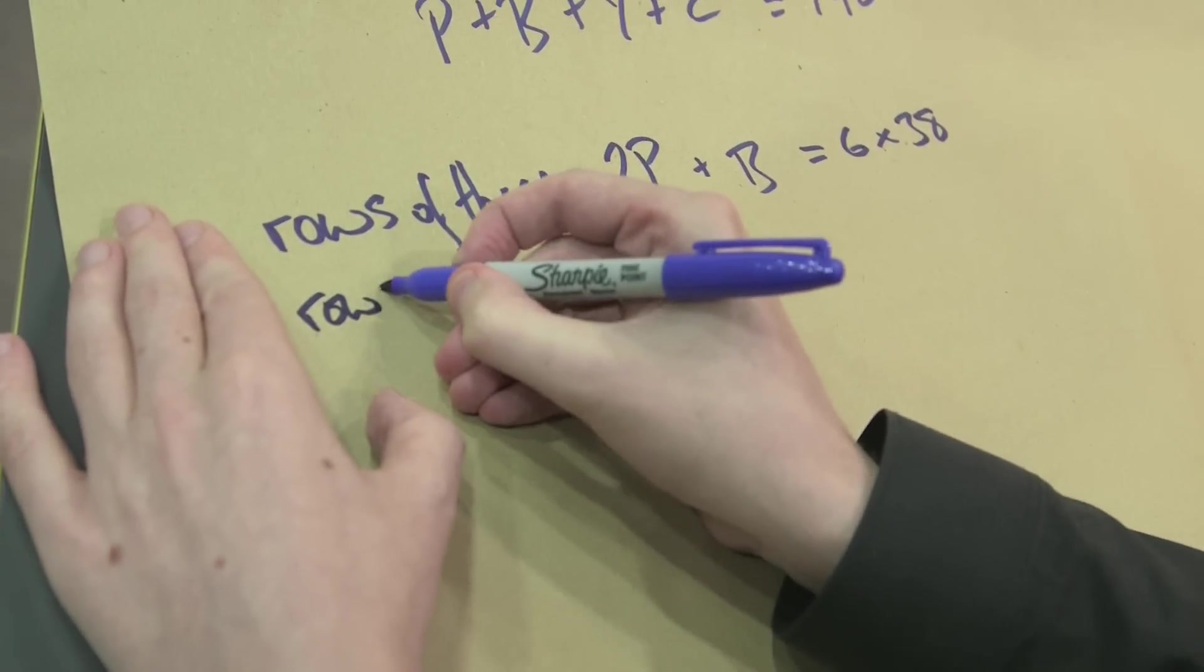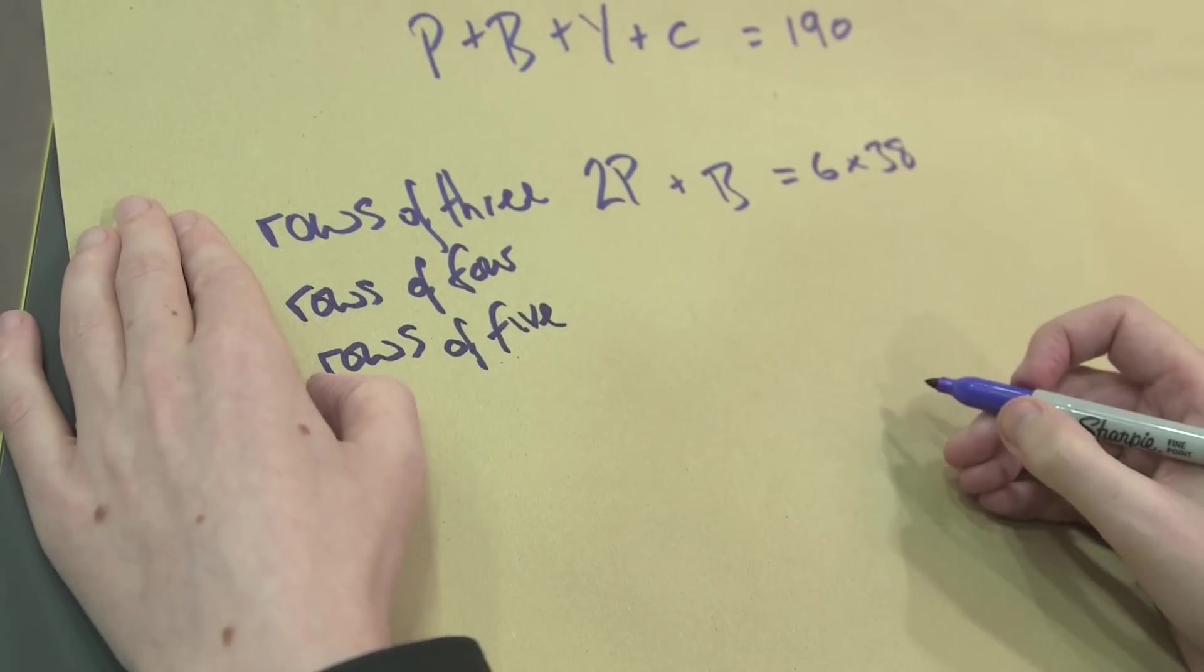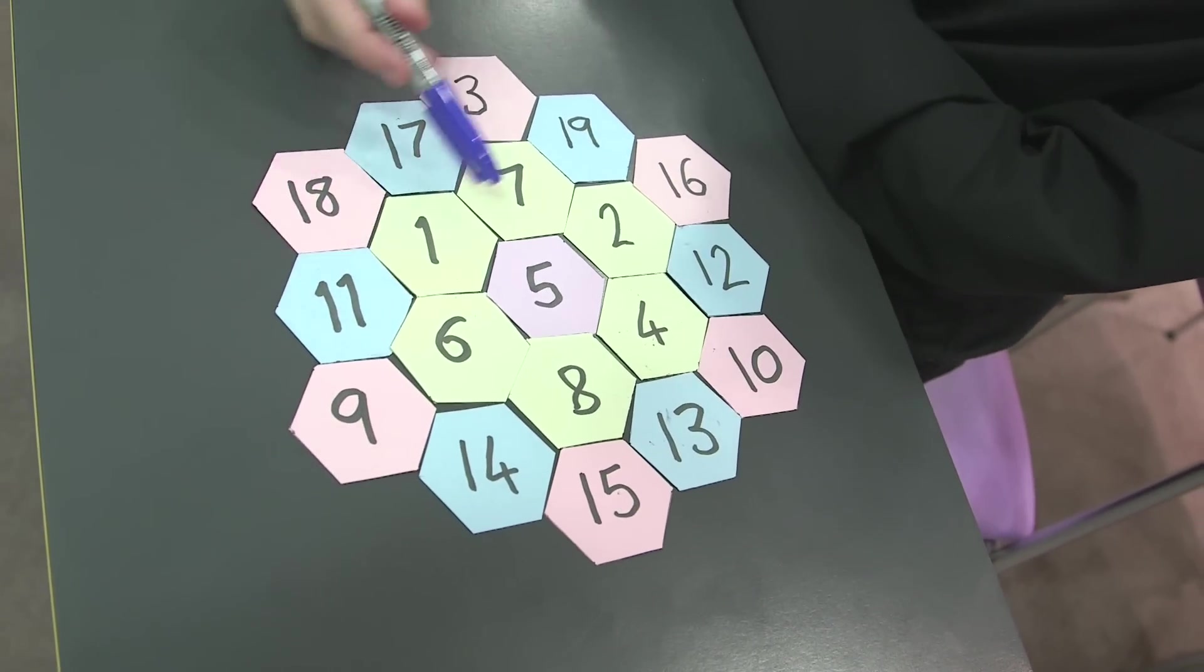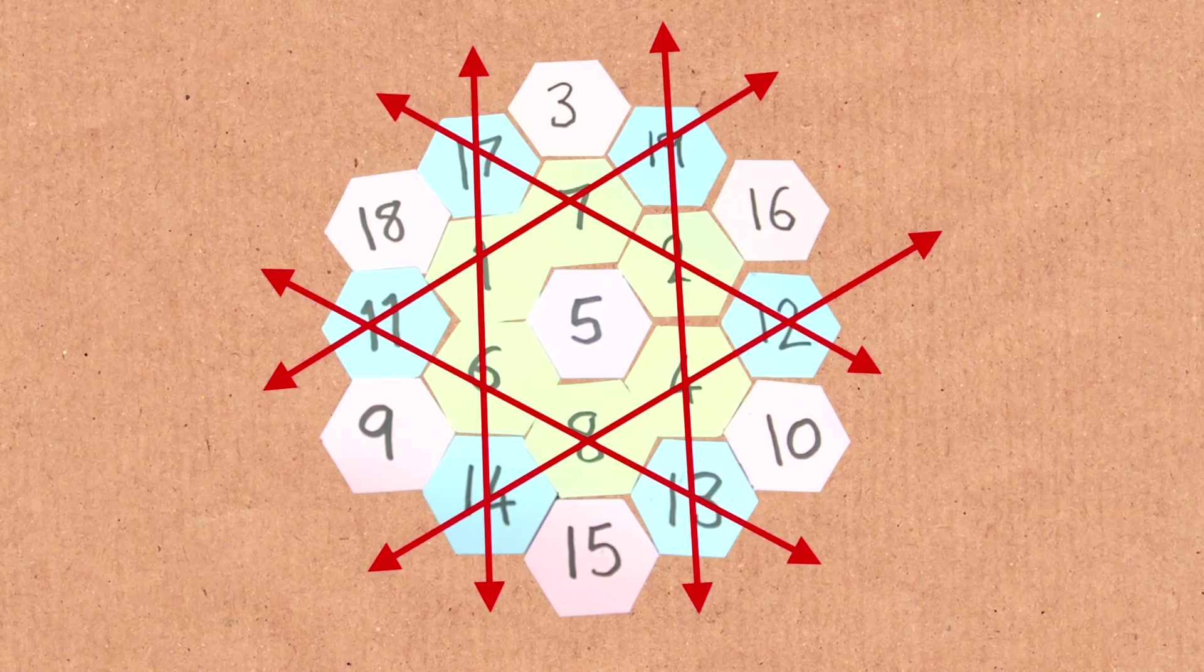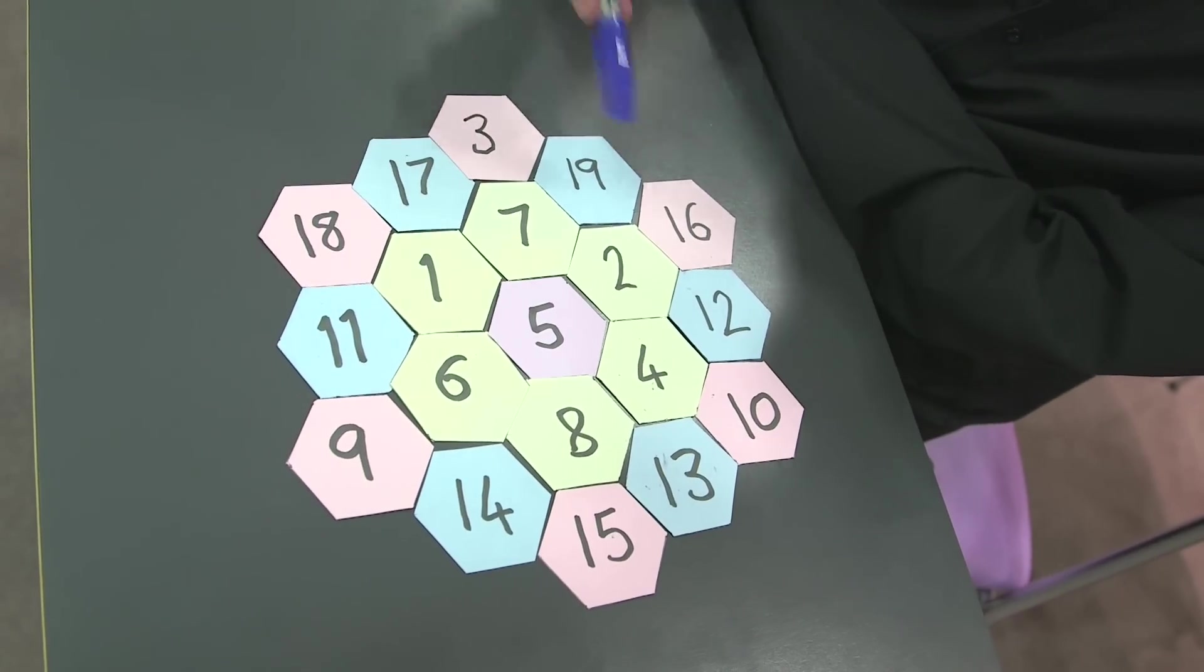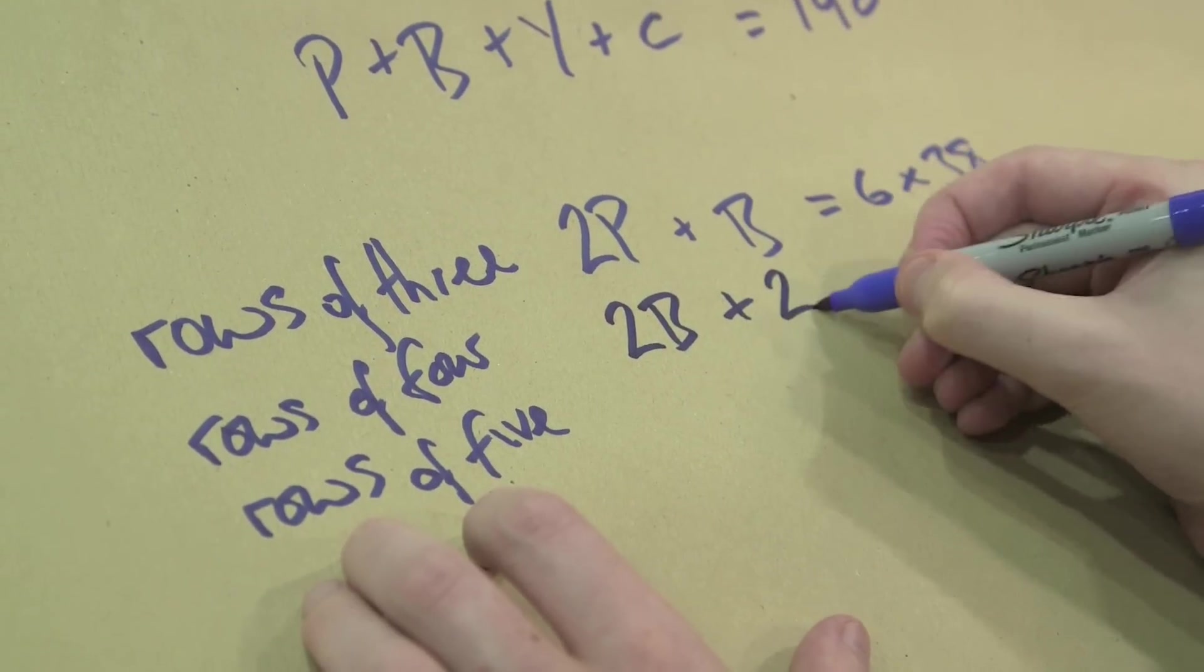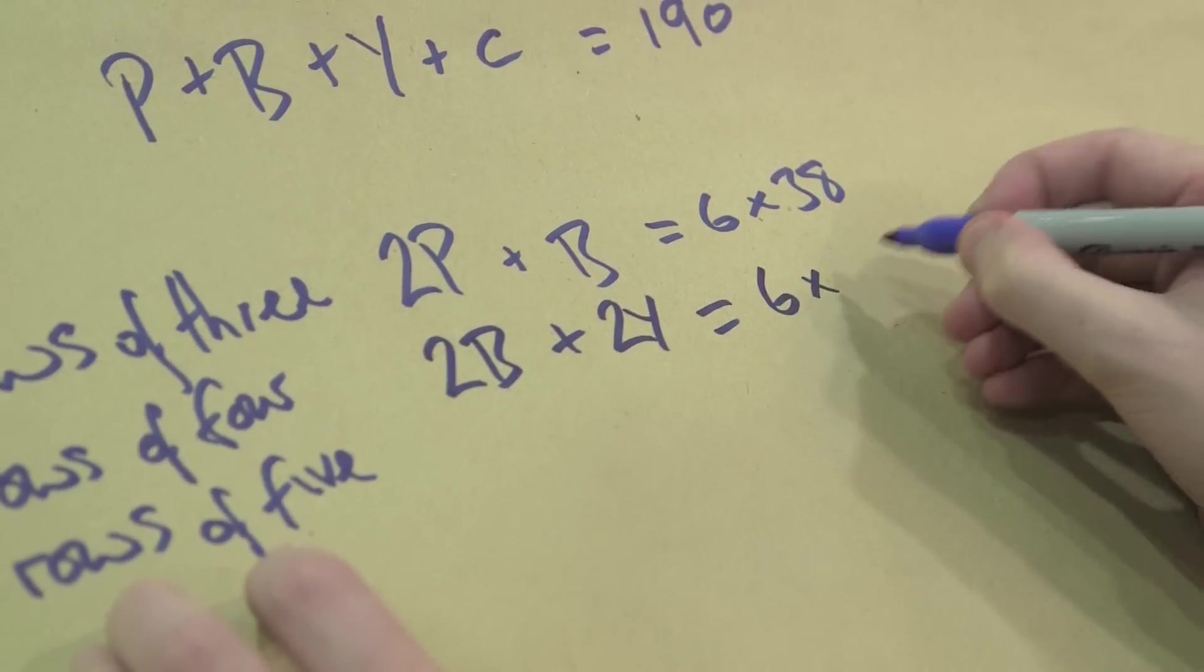If we do the same thing for the rows of four and the rows of five, and then we're nearly done. Let's do the rows of four. This is a row of four. So we're adding the blues together. We've got some yellows here, and that's going to be equal to 38. There's actually six of those as well. Rows of four, there's six of those, and I think for this, each blue is going to get counted twice, and each yellow gets counted twice. So we've got two lots of the blues and two lots of the yellows, and there's six of these rows, so it's six lots of the magic number 38.